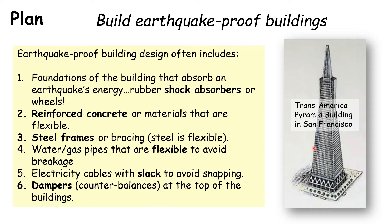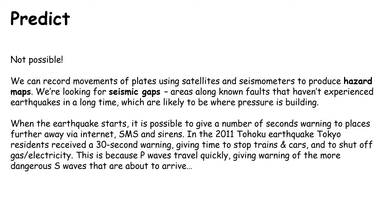Here's an example of an earthquake-proof building: the Transamerica Pyramid in San Francisco. During the 1989 earthquake in San Francisco, this building moved about a meter from side to side at the top but stayed standing, proving it's capable of surviving an earthquake.